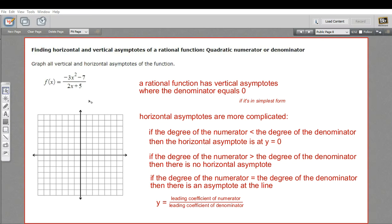In this problem, we're being asked to graph the asymptotes of this rational function. And that would be the first step before you graph a function, is to graph the asymptotes.